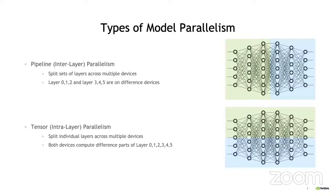Megatron supports two forms of model parallelism that can be used individually or in combination. Pipeline parallelism splits the model layer-wise across multiple devices. For example, when using two-way pipeline parallel, layers 0, 1, and 2 would be on one device and layers 3, 4, and 5 on the other. A model can be pipelined either using our own internal implementation in Megatron or by pairing Megatron with a framework like DeepSpeed.